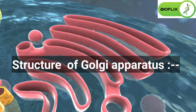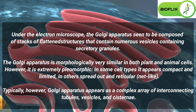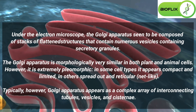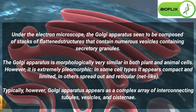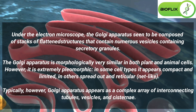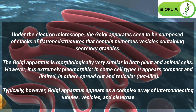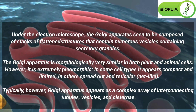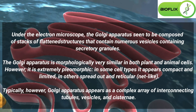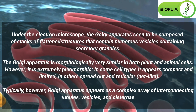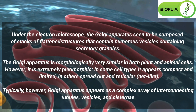Structure of Golgi apparatus. Under the electron microscope, the Golgi apparatus is seen to be composed of stacks of flattened structures that contain numerous vesicles containing secretory granules. The Golgi apparatus is morphologically very similar in both plant and animal cells. However, it is extremely pleomorphic — in some cell types it appears compact and limited, in others spread out and reticular, net-like.